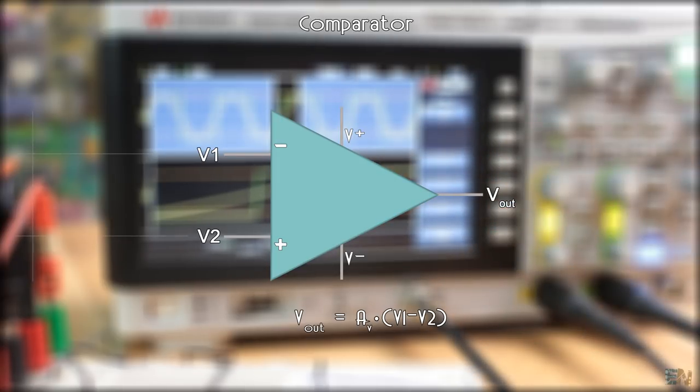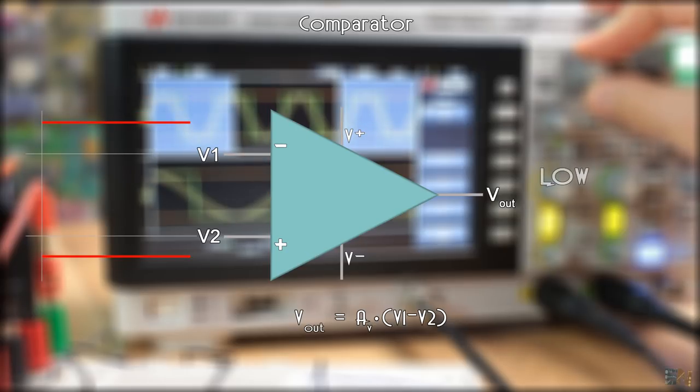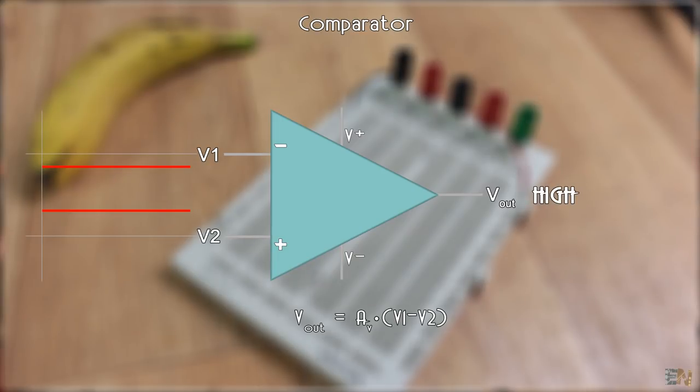Since the gain is infinite, whenever the positive input is lower than the negative, we will have a negative output, and when the positive is higher than the negative, a positive output.